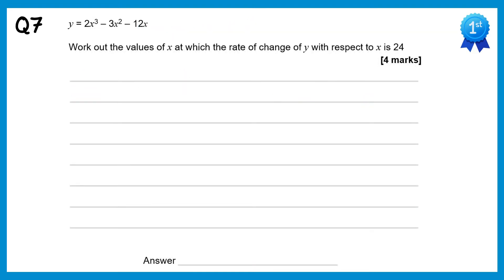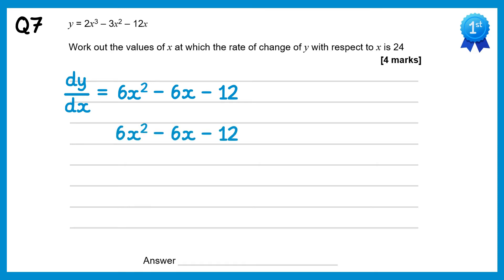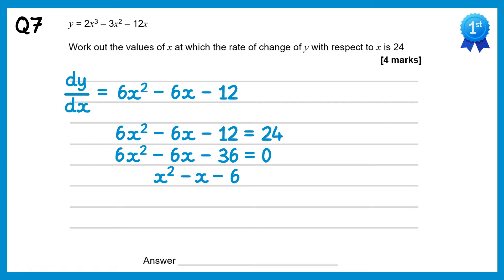For this question, dy/dx: 2x cubed differentiates to give 6x squared, negative 3x squared gives negative 6x, and negative 12x gives negative 12. Setting this equal to 24: 6x squared minus 6x minus 12 equals 24. Subtracting 24 gives 6x squared minus 6x minus 36 equals 0. Dividing by 6 gives x squared minus x minus 6 equals 0. Factorising gives x minus 3 and x plus 2 equals 0, so x equals 3 and x equals negative 2.